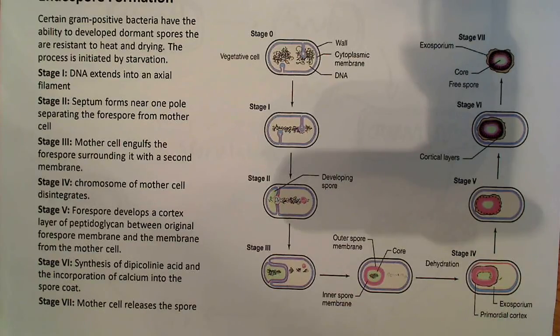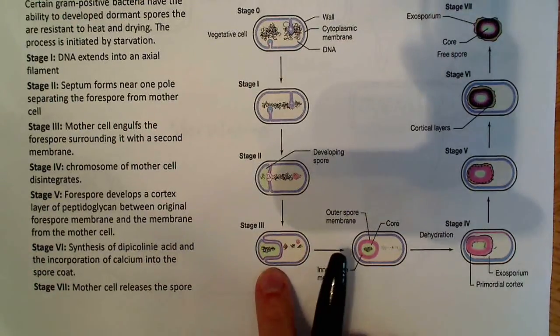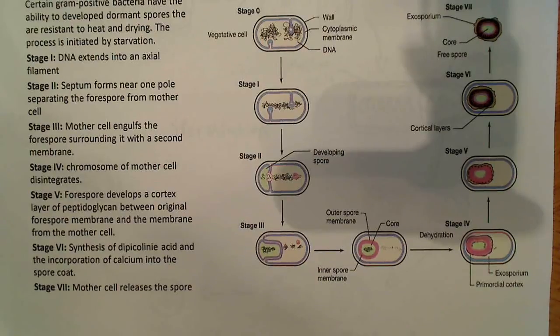After that, in the third stage, the mother cell engulfs the forespore, surrounding it with a second membrane. So it becomes a double membrane structure. And the mother cell here, you can see, it's engulfing the forespore. And you can see there's DNA in the forespore and everything else. This is eventually going to contain everything necessary to germinate into a viable cell.